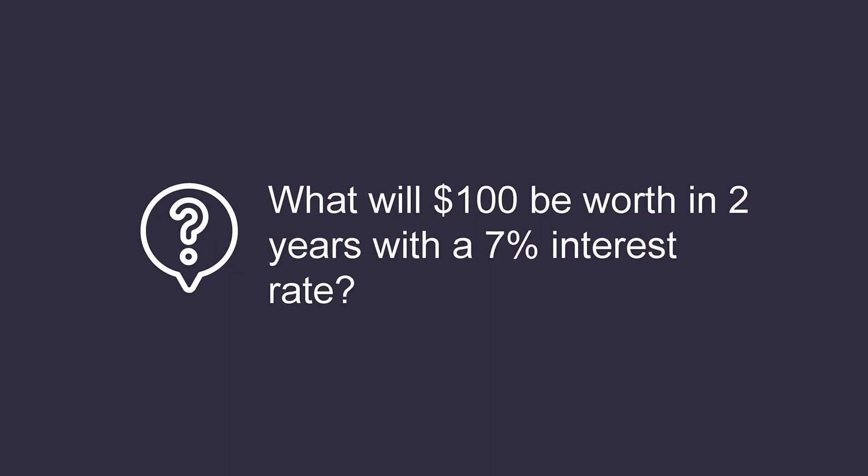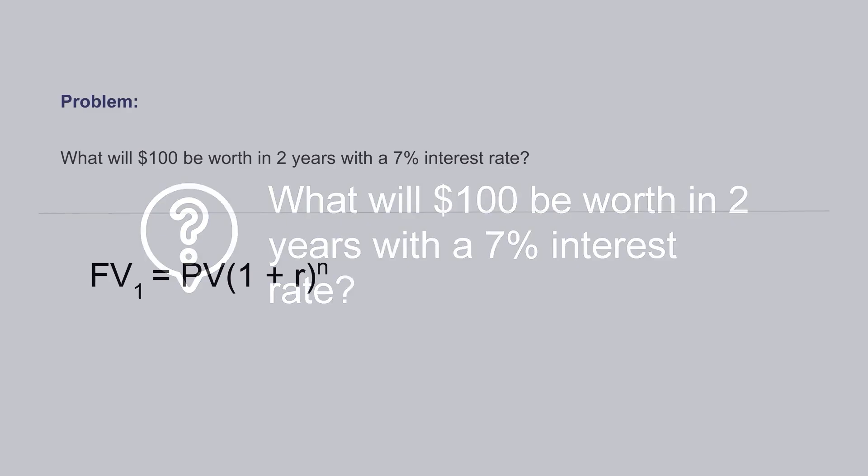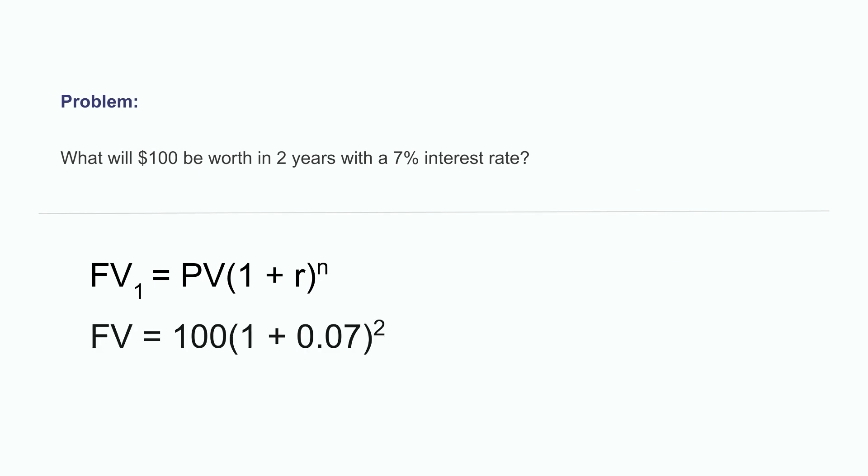For example, let's say I invest $100 with a 7% interest rate for 2 years and want to determine what it's going to be worth at the end of the investment. The calculation would look like this: we would take the $100 present value times 1 plus the 7% interest rate to the power of 2 compounding periods. This would result in a future value of $114.49. In other words, the $100 investment is expected to be worth $114.49 in 2 years' time. Performing this calculation is a great tool that can aid in the investment decision process.